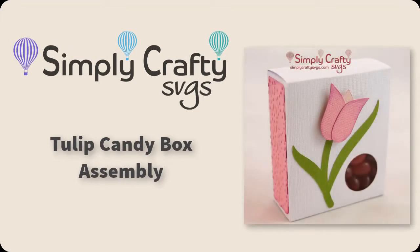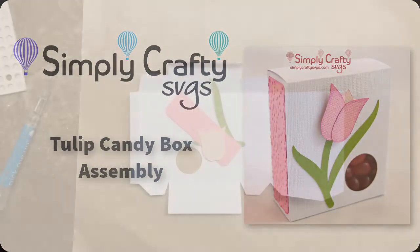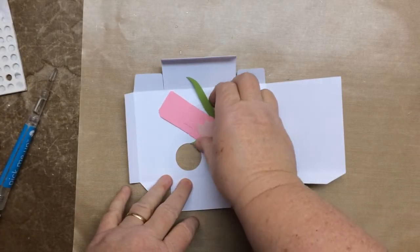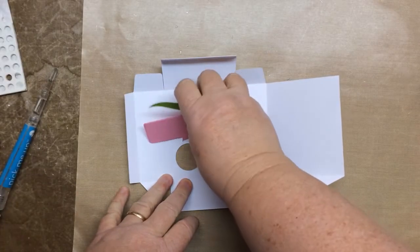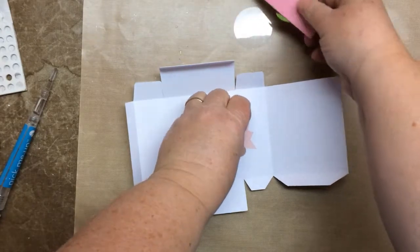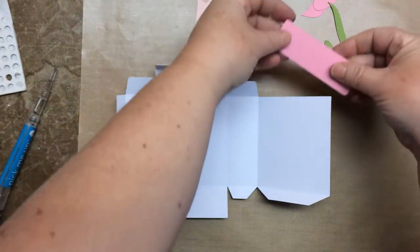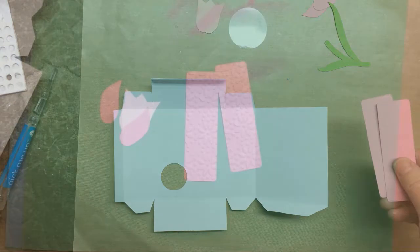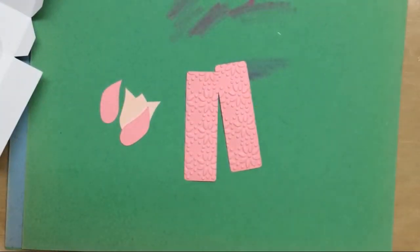Today I'm going to show you how to put together this free tulip candy box from Simply Crafty SVGs. So first, these are all the pieces that get cut out. Just to show you all the little pieces. There's not much to it. Two sides in the tulip and the acetate window.